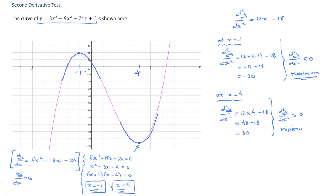That's how the second derivative test works. We look at the sign of the second derivative at any stationary point, and depending on whether it's positive or negative, we're dealing with either a local minimum or a local maximum. If the second derivative is positive, the curve is concave upwards, so we have a minimum. If it's negative, the curve is concave downwards, so we have a maximum. I hope that helps.